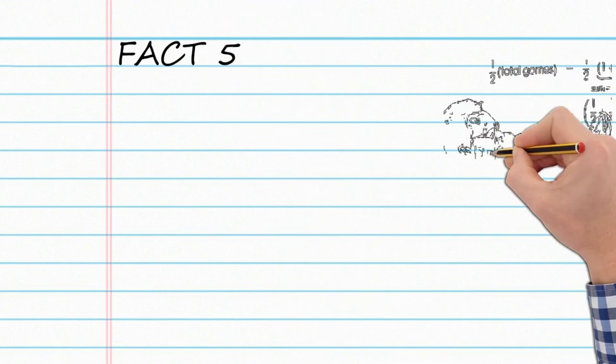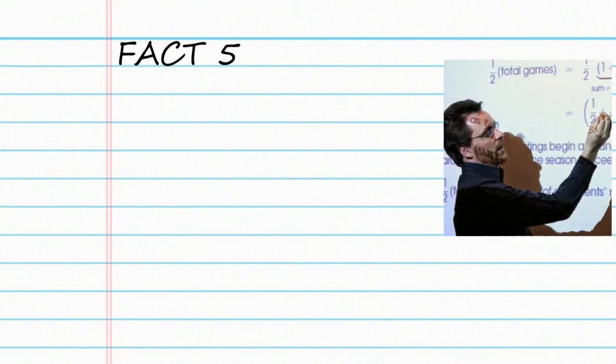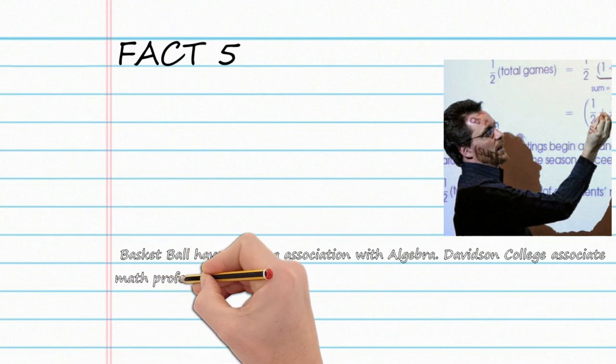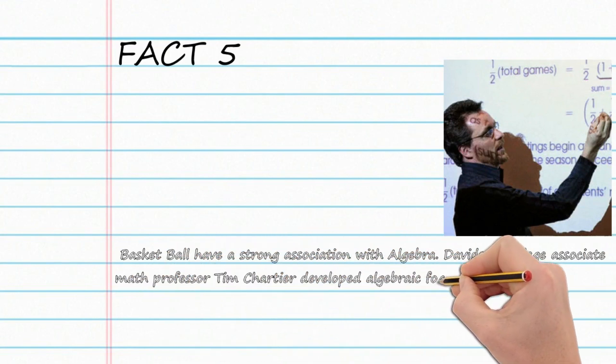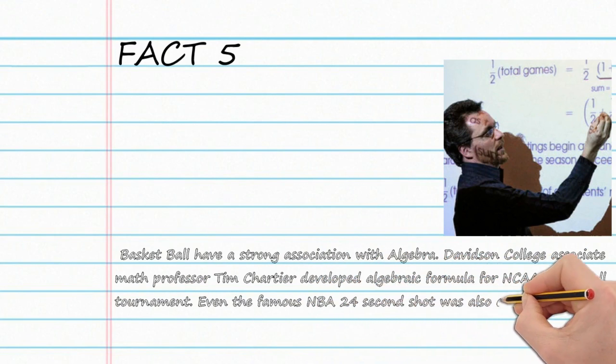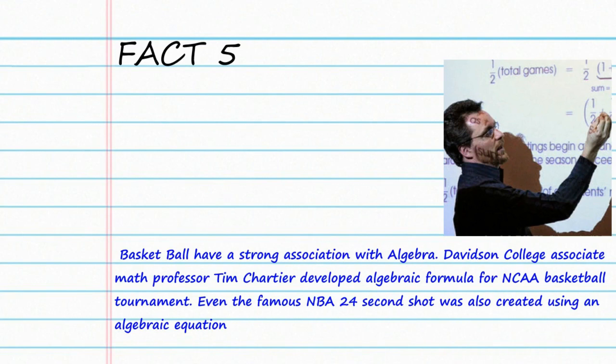Fact 5 tells us that basketball has a strong association with algebra. Davidson College associate math professor Tim Chartier developed an algebraic formula for the NCAA basketball tournament. Even the famous NBA 24-second shot clock was also created using an algebraic equation. As I said before, algebra has a notion of fields to follow and apply in the real world.